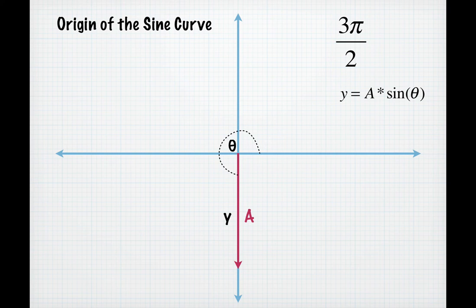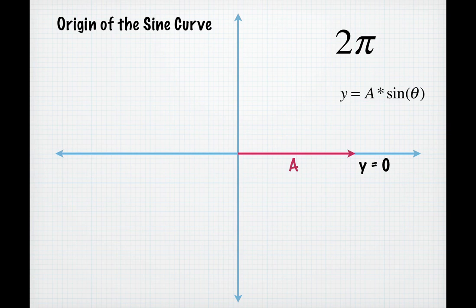The y value will then increase again across the negative numbers until it gets back to zero and that will occur after one full revolution, which is 2 pi radians.